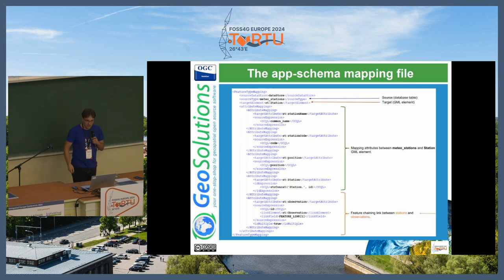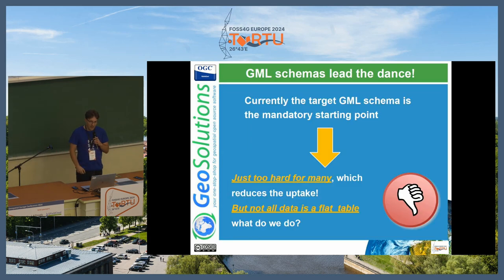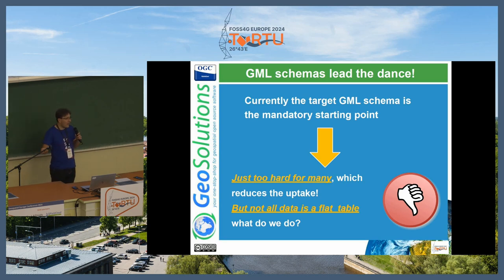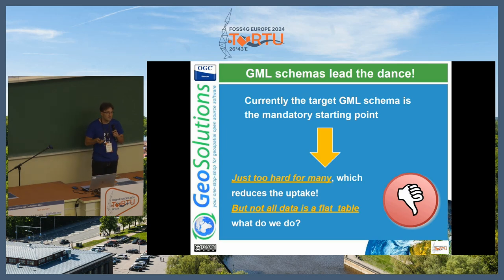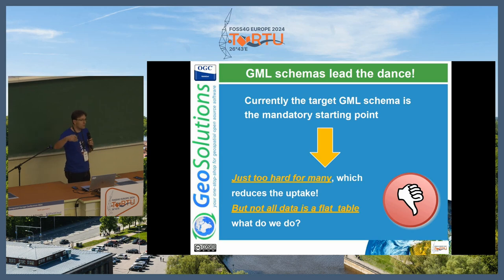This is really complicated. We have an XML mapping file that defines what goes where and how to map back and forth. Generally, in order to use the application schema plugin, you need an application schema to target. What if I just wanted to publish some information that doesn't have an already available XML schema? I have to build one — that's a hefty ticket. It's just too hard for many, and not everyone actually needs to target a well-known shared schema. They just want to publish complex features.